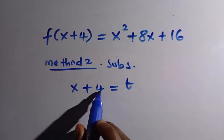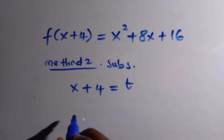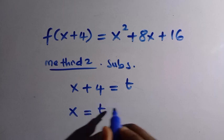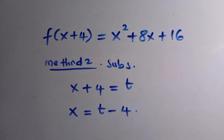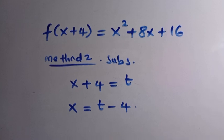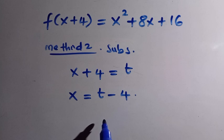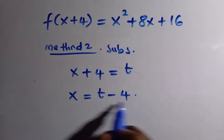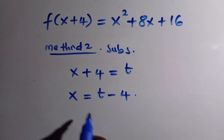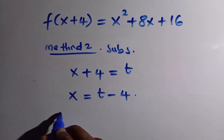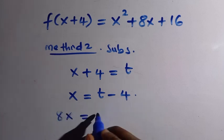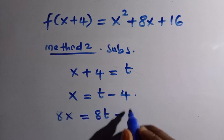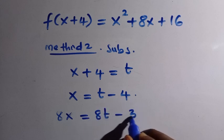By making x the subject of the formula, we have x equals t minus 4. From the right hand side we have x squared plus 8x plus 16, so we need 8x and x squared. Multiplying x equals t minus 4 by 8 gives 8x equals 8t minus 32.